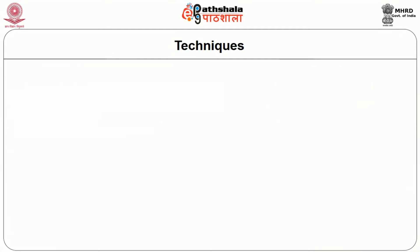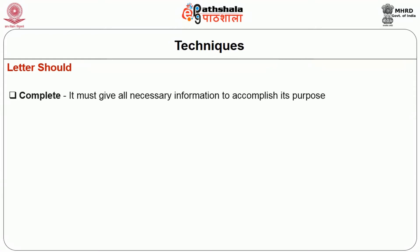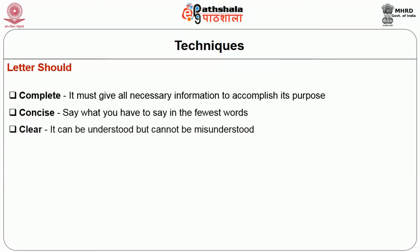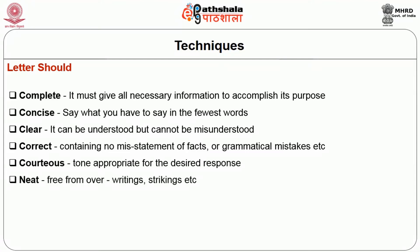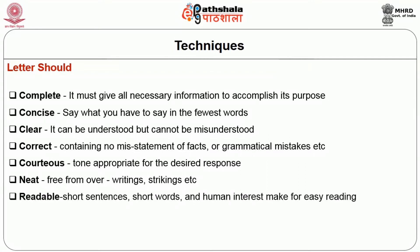The objectives of a personal letter are to answer queries from farmers regarding specific farm problems or supplies and services, and to ensure the farmer's cooperation in extension activity. A good personal letter should be: complete — giving all necessary information; concise — saying what needs to be said in the fewest words; clear — understandable and cannot be misunderstood; correct — containing no misstatement of facts or grammatical mistakes; courteous — tone appropriate for the desired response; and neat — readable with short sentences, short words, and human interest.